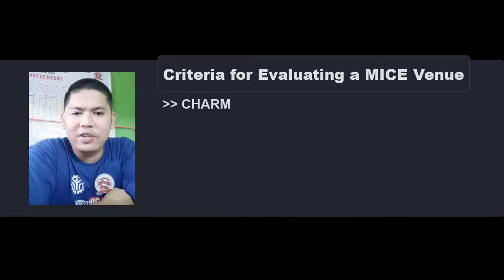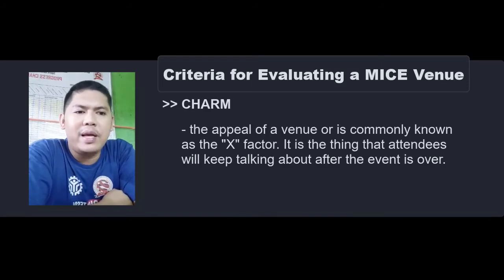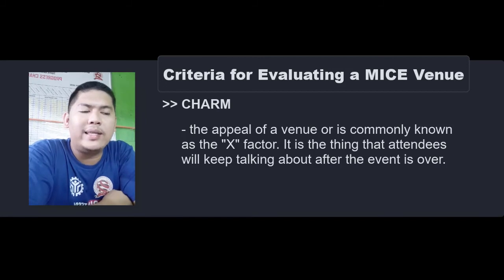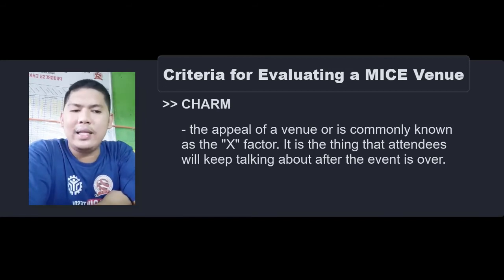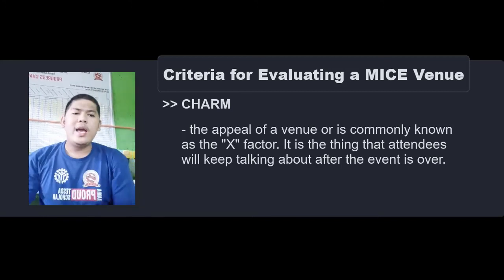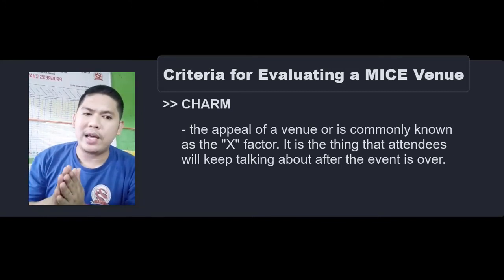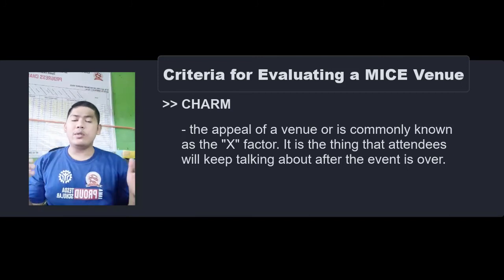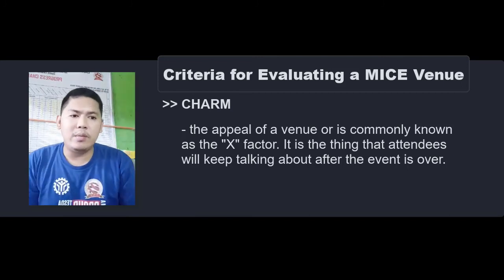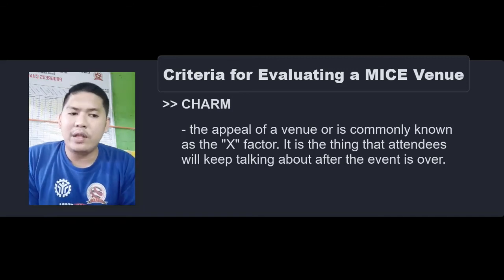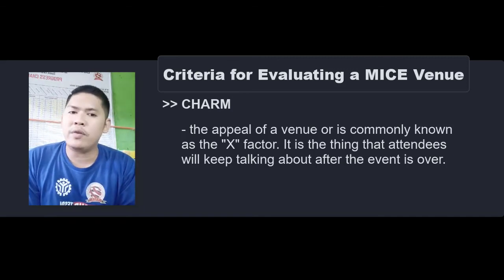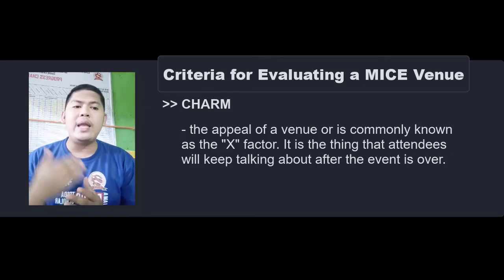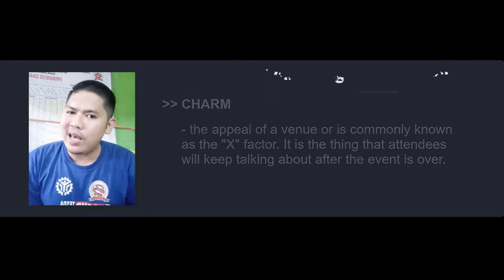Number three is Charm. The appeal of the venue is commonly known as the X-factor. It is the thing that attendees will keep talking about after the event is over. It can be manifested in the cultural value of the venue, such as a UNESCO World Heritage Site like St. Augustine Church in Intramuros, or it can be the brand of the venue such as an international resort, or simply its aesthetic charm and appeal to the attendees.